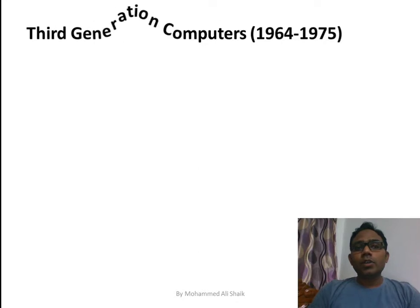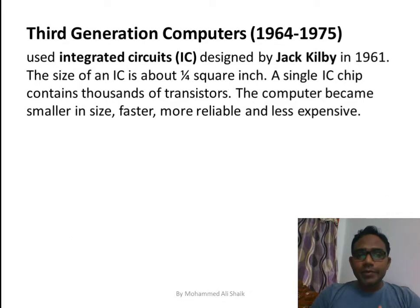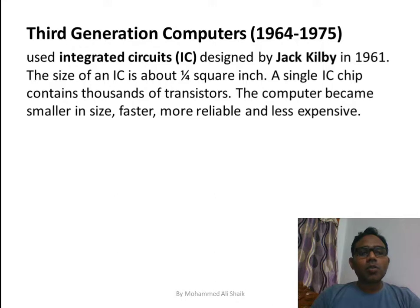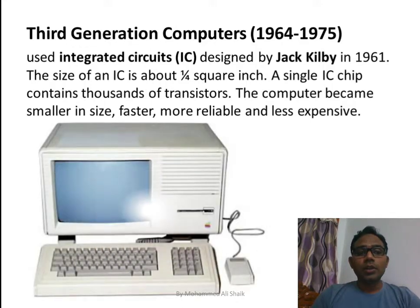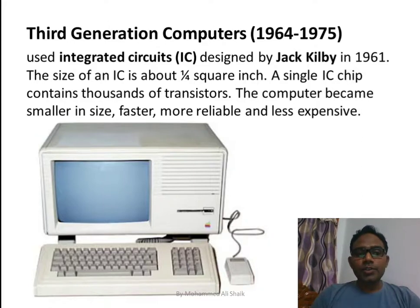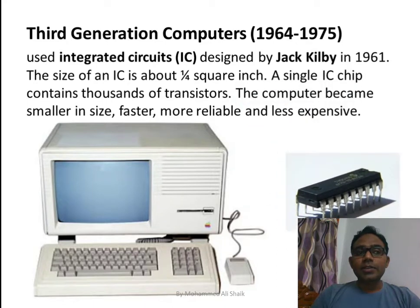Third generation computers were introduced from 1964 to 1975, based on integrated circuits designed by Jack Kilby in 1961. The size of the IC is a quarter square inch. A single IC chip contains thousands of transistors, and the computer was reduced to fit on a single desk — smaller, faster, more reliable, and less expensive. The first IC computer had a mouse, keyboard, and CPU integrated with a monitor.